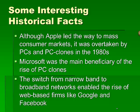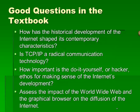Although Apple led the way to mass consumer markets, it was overtaken by PCs and PC clones in the 1980s. Microsoft was the main beneficiary of the rise of PC clones, dominating the operating system market — first DOS and then the Windows operating system. The switch from narrowband to broadband networks enabled the rise of web-based firms like Google, Facebook, Twitter, and Pinterest. The textbook for this course raises questions such as: How has the historical development of the Internet shaped its contemporary characteristics? Is TCP/IP a radical communications technology? How important is the do-it-yourself or hacker ethic for making sense of the Internet's development? And what is the impact of the World Wide Web and the graphical browser on the diffusion of the Internet?